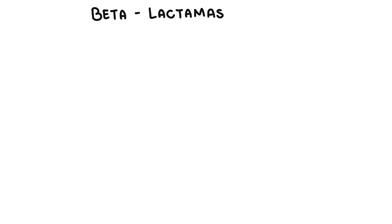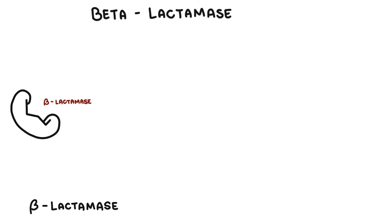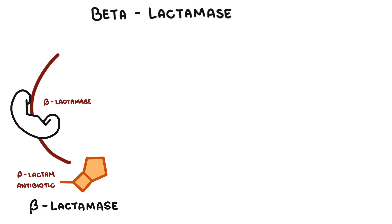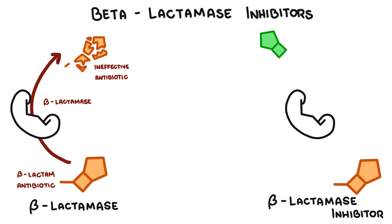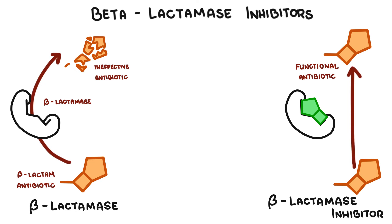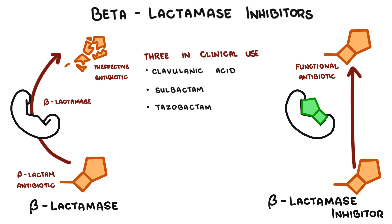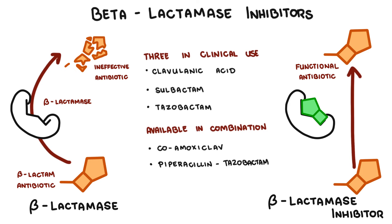Beta-lactamases are enzymes that bind covalently to the beta-lactam ring of antibiotics, hydrolyze it, and make the antibiotics ineffective, so the bacteria survives. There are beta-lactamase inhibitors that stop beta-lactamase and restore the antibacterial properties of the antibiotic. There are three main beta-lactamase inhibitors in clinical use: clavulanic acid, sulbactam, and tazobactam. All are only available in combination with a beta-lactam antibiotic, such as co-amoxiclav and piperacillin with tazobactam, also known as Tazocin.